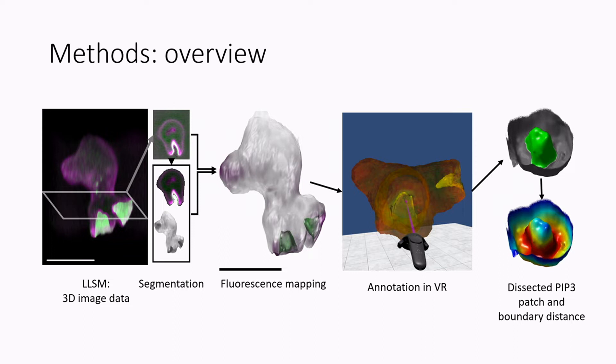I'll be talking briefly about some VR software that we'll be releasing soon, which we use for marking out the cups, and then finally I'll talk about the analysis that we've done from all of this using the PIP3 patches as a reference on the surface to actually understand a bit more about the process. And then at the end I'll briefly talk about some modeling that we've been doing, mathematical modeling.